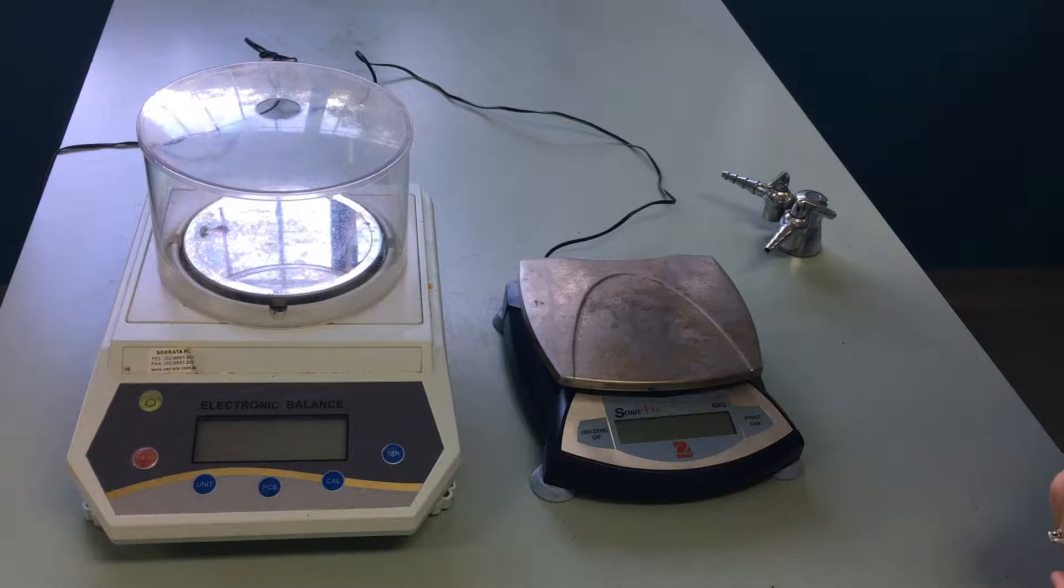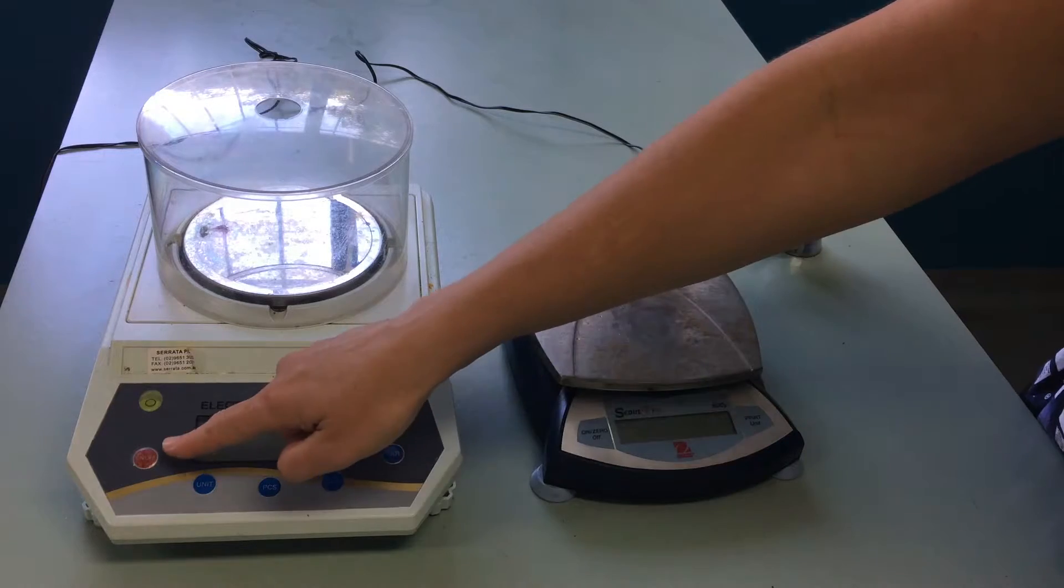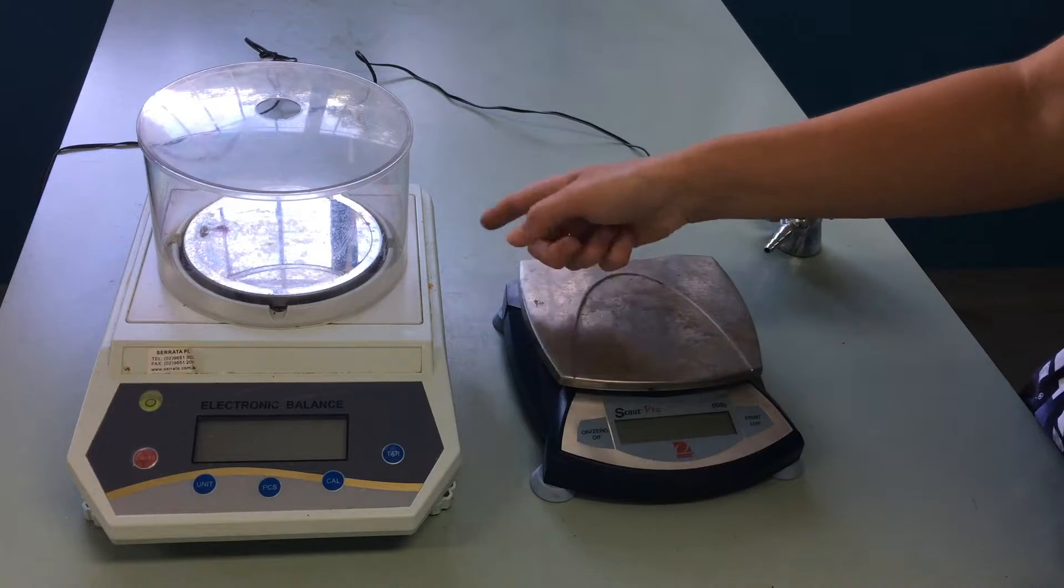Today I'm going to show you how to weigh the mass of an object using an electronic balance. All electronic balances will have an on-off button at the front here, or perhaps a switch on the side.